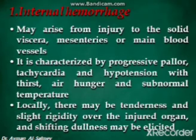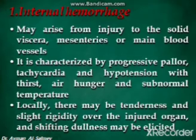The patient may present with internal hemorrhage, which may arise from injury to the solid viscera, mesenteries, or the main blood vessels. It is characterized by progressive pallor, tachycardia, and hypotension, with thirst, air hunger, and subnormal temperature. Locally there may be tenderness and slight rigidity over the injured organ, and shifting dullness may be elicited.